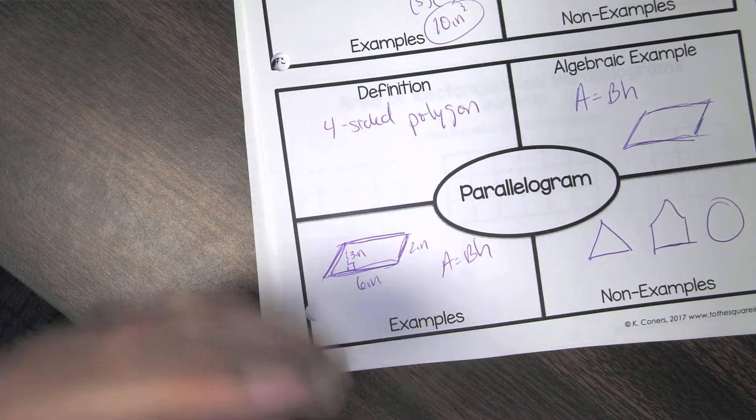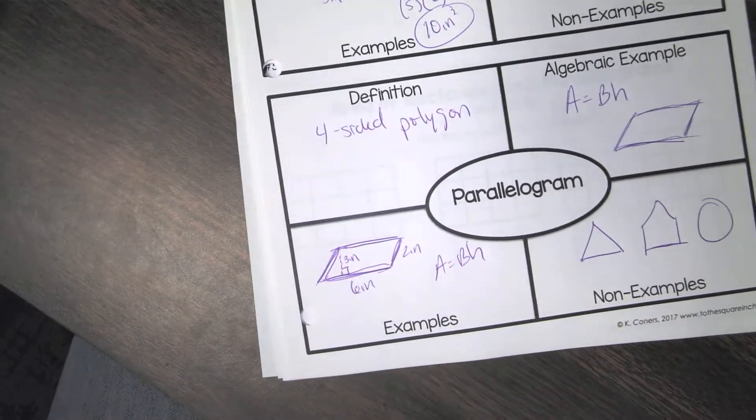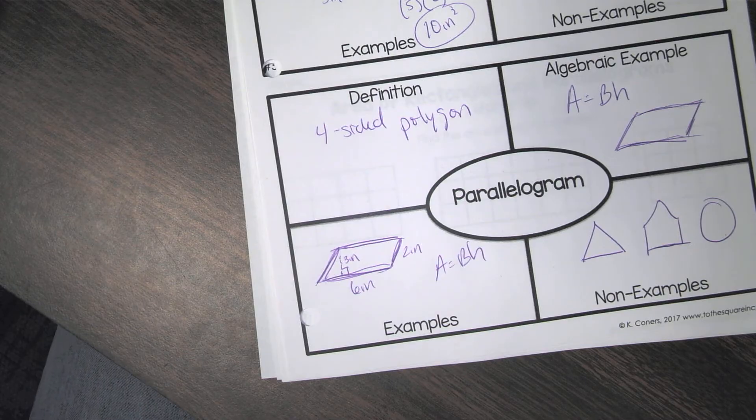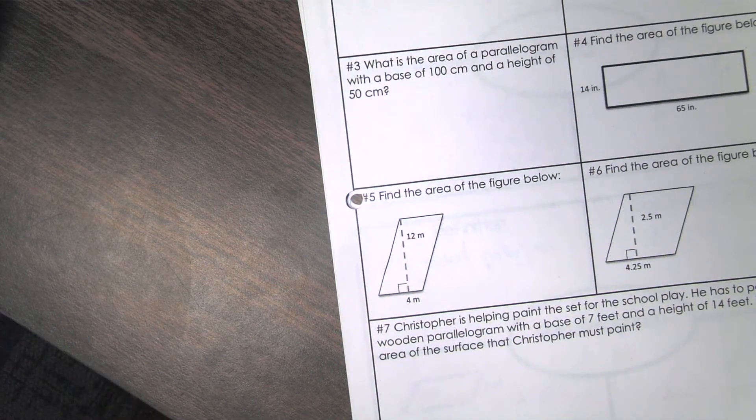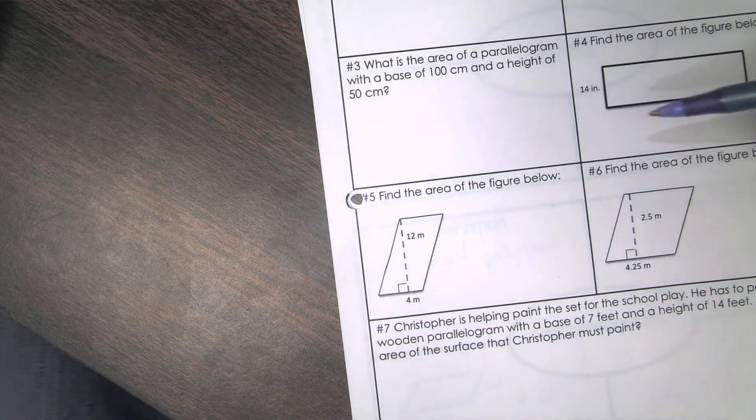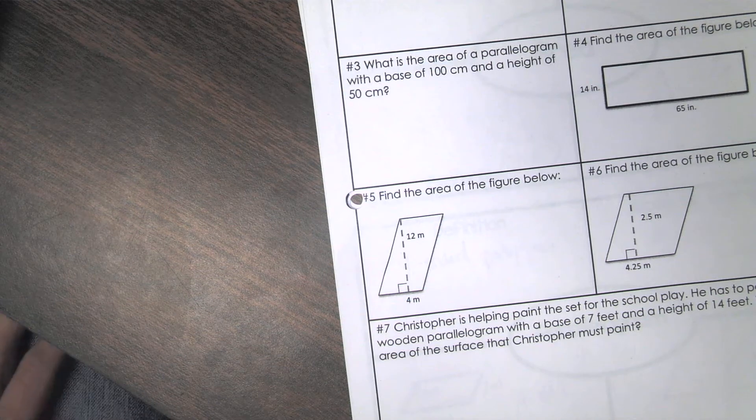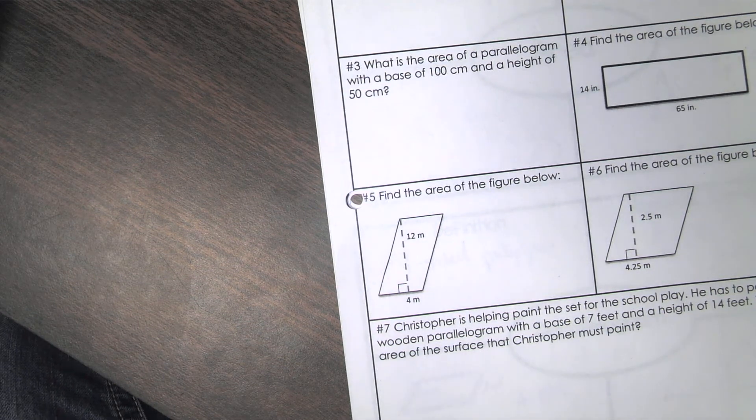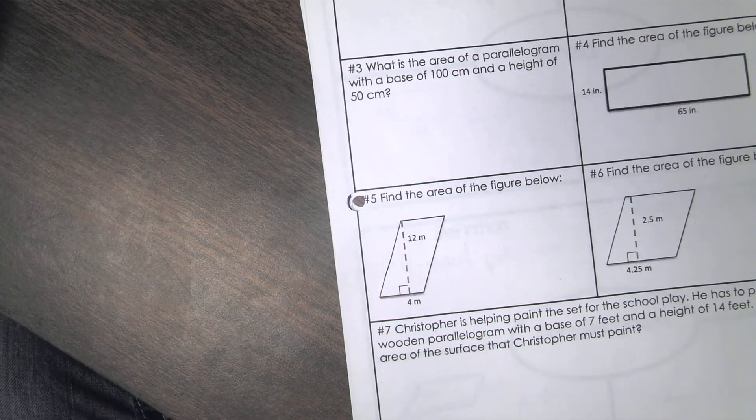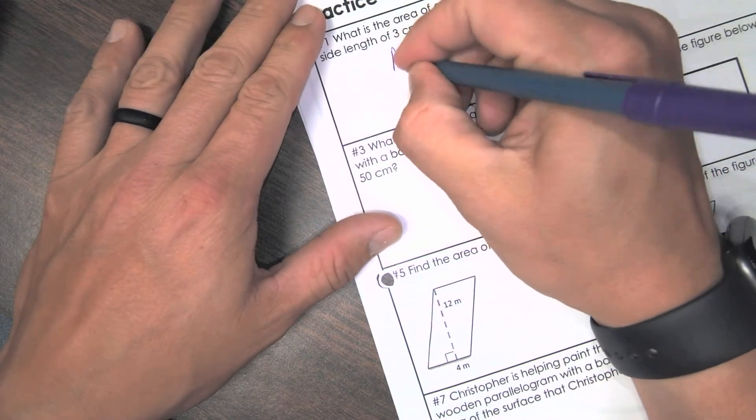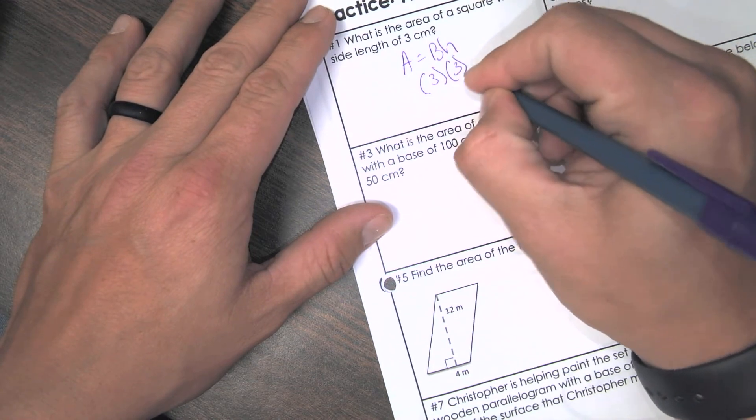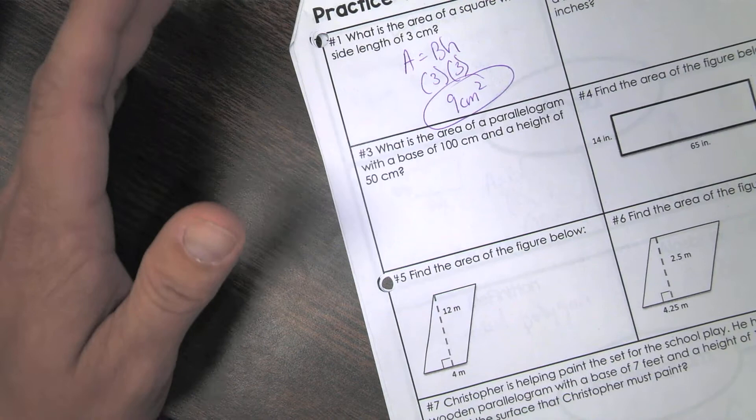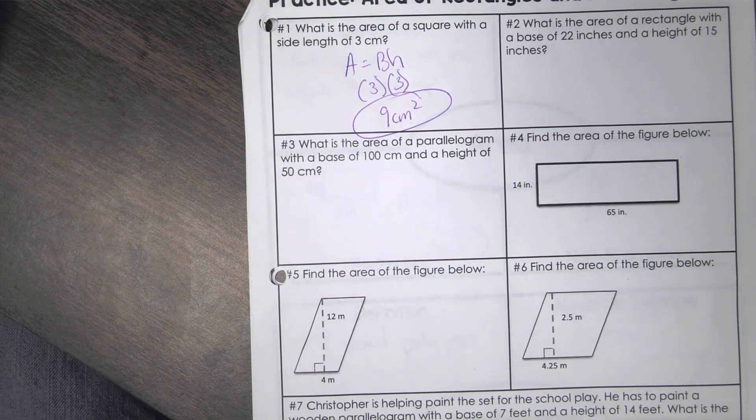So now let's go back to the other page. So once you have all that, go ahead and go back to the other page. So now we are going to work on some problems here. So number one, what is the area of a square with a side length of three centimeters? This one's a little bit different because it's a square. But technically speaking, a square is a rectangle. So all you're doing is base times height. But they only give us one side length. What do we know about squares? They all have the same side length. So if we're finding the area and it's base times height, what's the base? And what's the height? So what's our area? Nine centimeters squared. That's it.